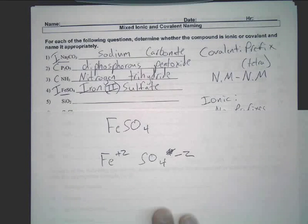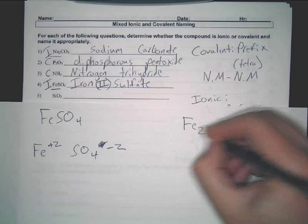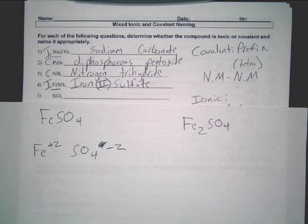So, we would write Roman numeral two. Now, let me show you one other one. Let's say that we had Fe2SO4. Now, iron will never have this charge, but just to show you an example, we'll sort of prove a point.